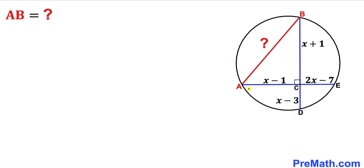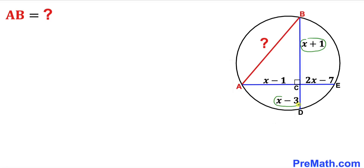Welcome to pre-math. In this video we have got these blue intersecting chords inside this circle, as you can see in this diagram, such that this line segment is represented by x minus 1 and this line segment is represented by 2x minus 7, whereas these line segments are represented by x plus 1 and x minus 3.